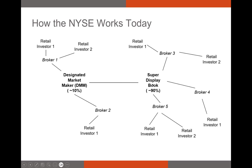Anytime orders are updated in Super Display Book, the DMM can see that, so there should generally be parity between the trading prices. Brokers themselves can also process orders internally — if I want to buy 100 shares of Ford and my broker wants to sell 100 shares of Ford, they may actually take the opposing side of that trade, meaning some orders might not even make it to the actual Super Display Book.